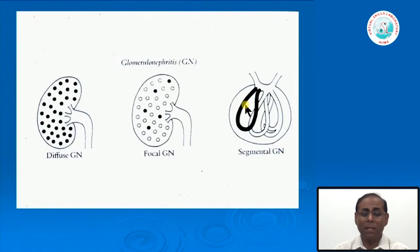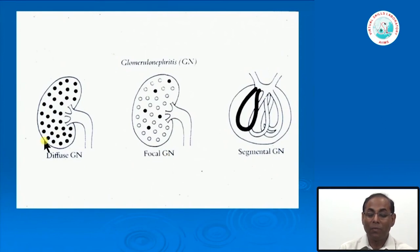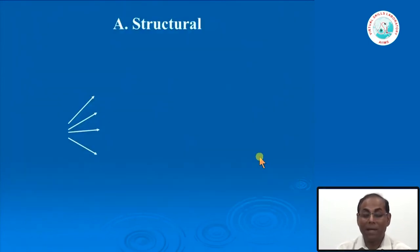A schematic diagram illustrates diffuse glomerular involvement versus focal glomerular involvement. Less than 50 percent of glomeruli involved is focal, and involvement of less than 50 percent of capillary loops in a glomerulus is segmental. So the terms diffuse, focal, segmental, and global are used to further classify glomerulonephritis.